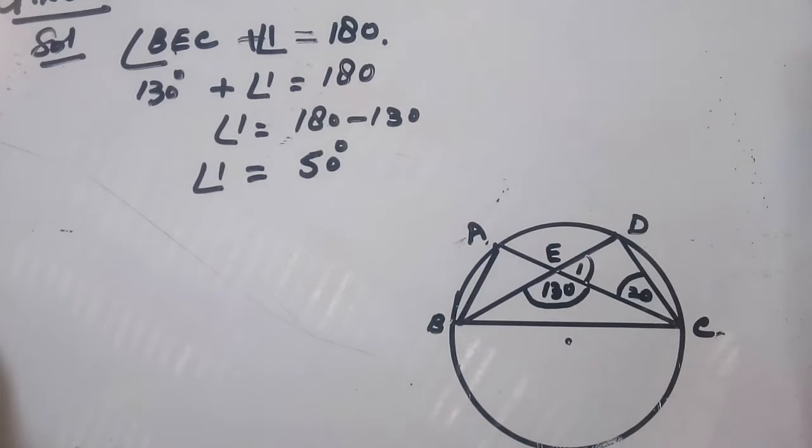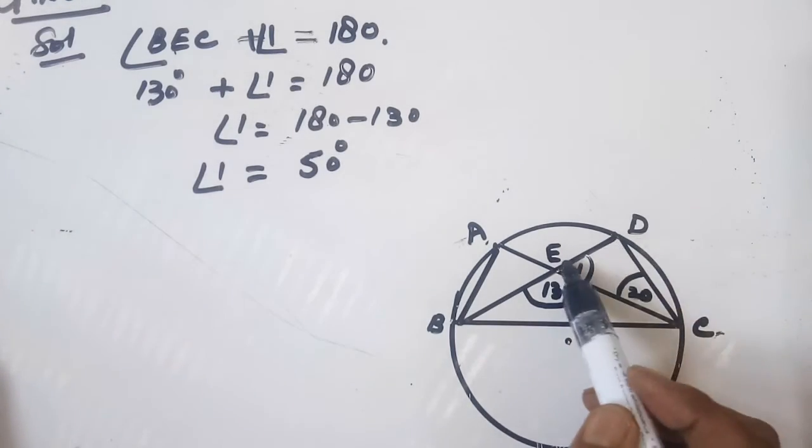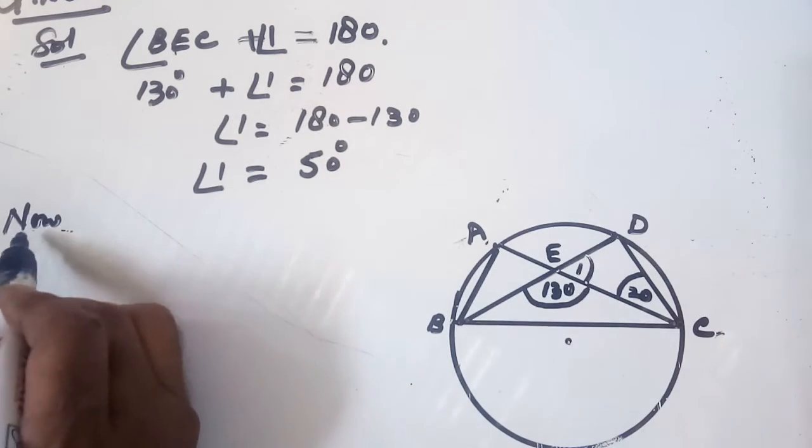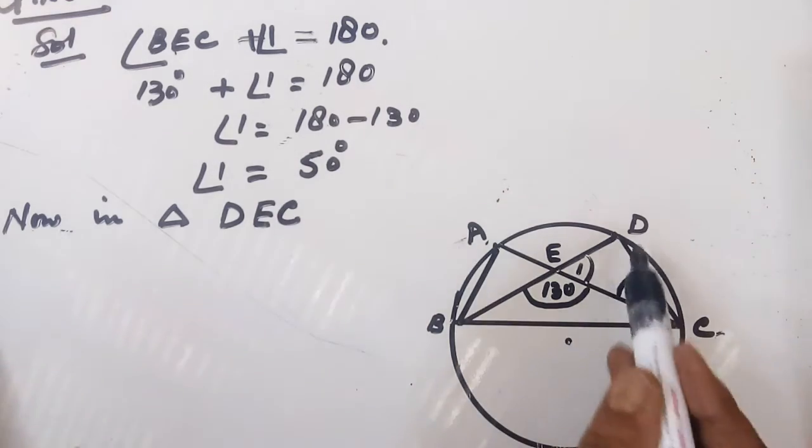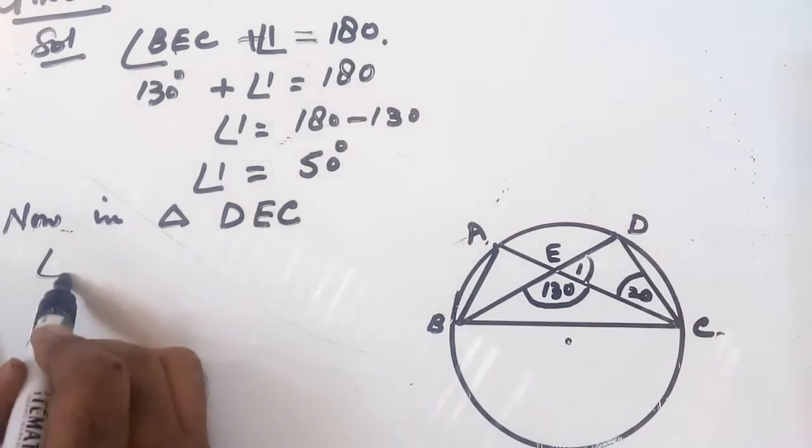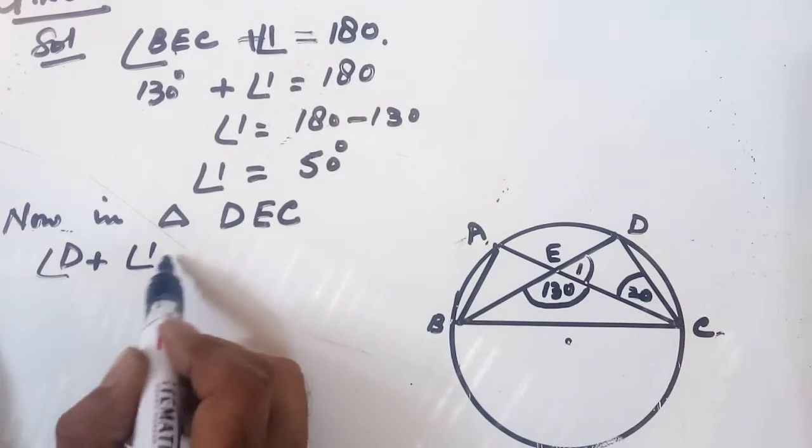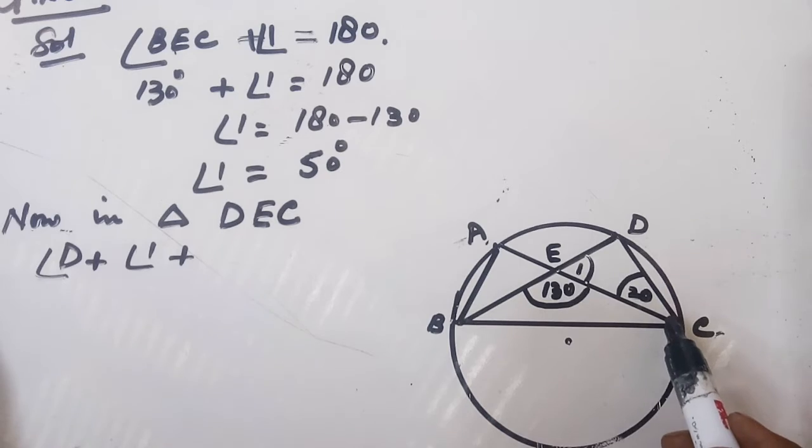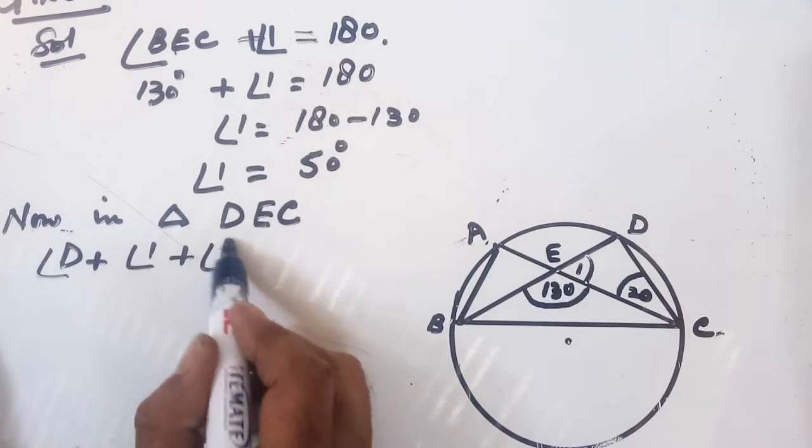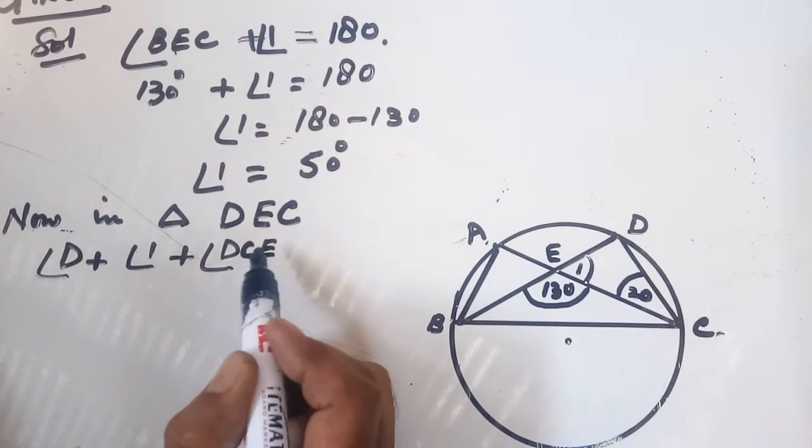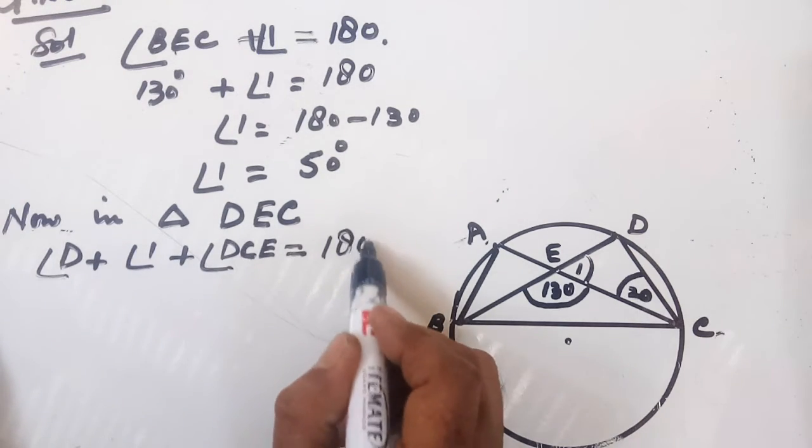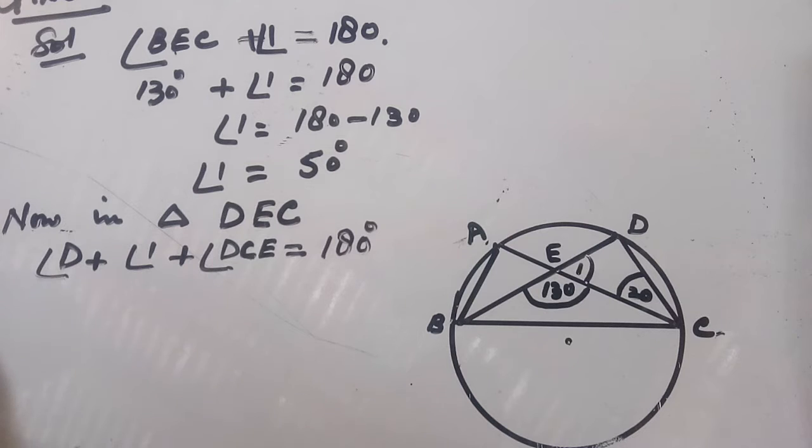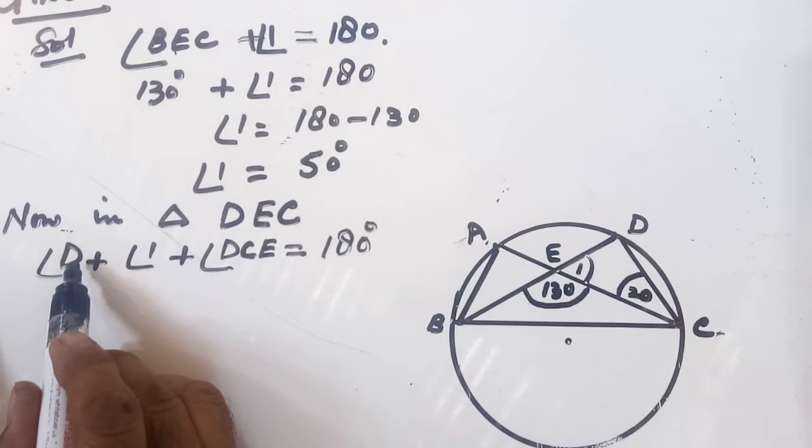Now in triangle DEC, the three angles are angle D, angle 1, and angle DCE. The sum of angles in a triangle is 180 degrees.